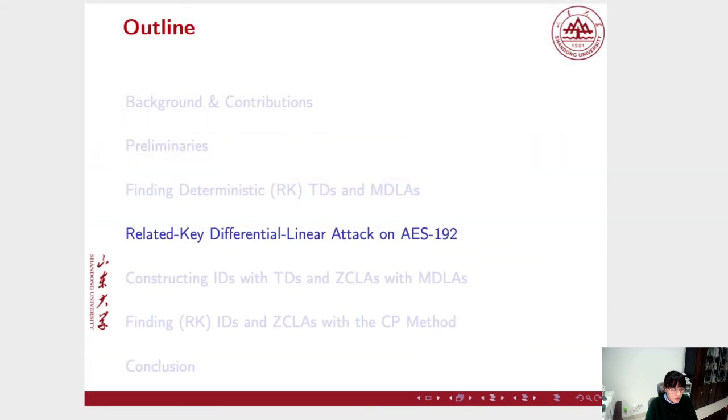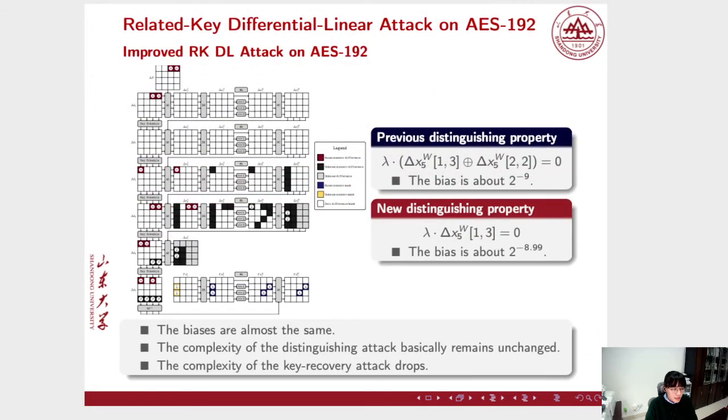Now, let's move on to the improved related-key differential-linear attack on AES-192. Since the previous 5-round RKDL distinguisher relies on a 4-round RKTD with probability 1 for the first cipher, we try to implement the method we introduced above to search for better RKTD so that we can construct better RKDL distinguishers. But after the complete search with the model, we find that the length of the optimal TD cannot be extended due to the well-designed diffusion layer.